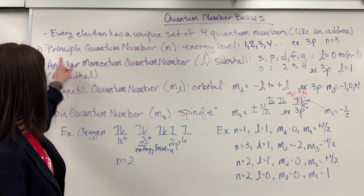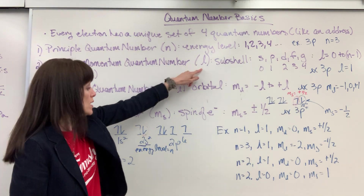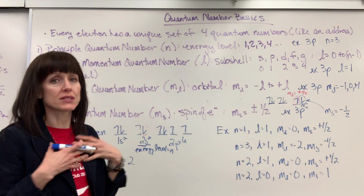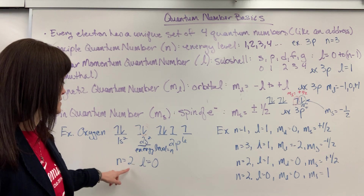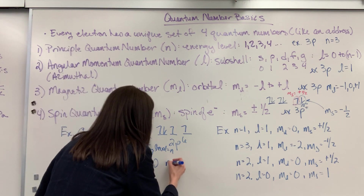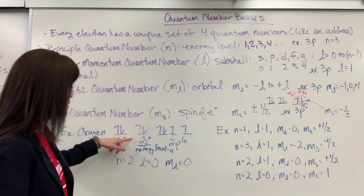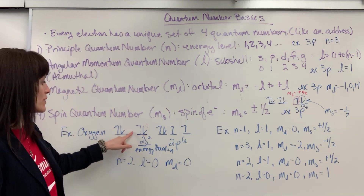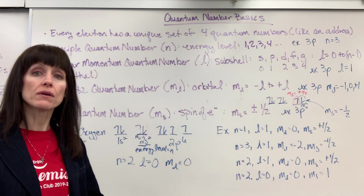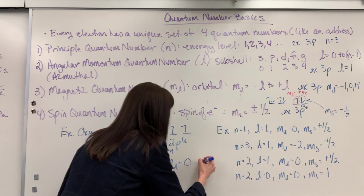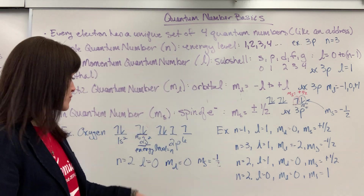Then we go to the angular momentum — that is the subshell. The subshell is S, which we give the number zero, so L equals zero. I check myself: the rule on L is that it has to be at least one less than N — yep, it is. My M sub L can only be plus or minus L. Well, if L is zero, I only have one choice: M sub L has to be zero. In the S subshell there's only one orbital, so M sub L equals zero. Now, this electron's spin is spinning down, so the spin quantum number M sub S is negative one half. We just gave the four quantum numbers for that electron.